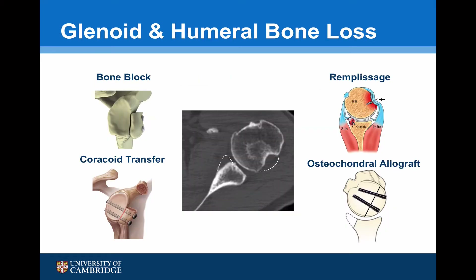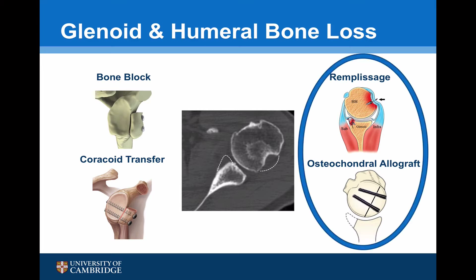The majority of bone loss problems associated with anterior instability can be addressed by either a bone block or coracoid transfer procedure on the front of the glenoid. However, there are some situations where the Hill-Sachs lesion posteriorly needs to be considered. Surgery for Hill-Sachs lesions is really considered at both ends of the spectrum: a remplissage may be used where there is only modest anterior bone loss with a Hill-Sachs lesion, and an osteochondral allograft or various arthroplasty procedures where there is a massive Hill-Sachs defect.